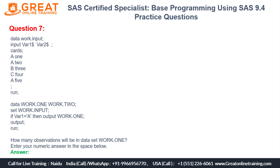In question number seven, we have a data step creating work.input as a dataset. We have column one as var1 and column two as var2 — two character variables. Within that we are creating rows: A1, A2, B3, C4, and A5, then run. Once this data step executes, five observations with two variables will be created.